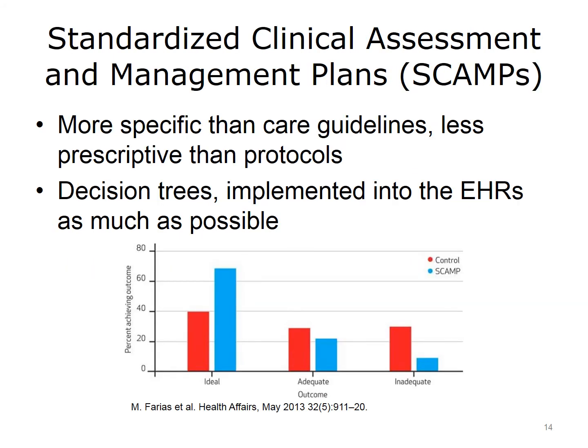Finally, let's look at the work by Boston Children's Hospital to develop standardized clinical assessment and management plans, also known as SCAMP. These plans are more specific than guidelines of care but less prescriptive than protocols. They're designed by the health system based on extant knowledge and internal observational studies. At Boston Children's, there are decision trees where each characteristic leads down a different path with different probabilities for outcomes. They attempt to enter these into the EHR in terms of what data needs to be collected and to support the SCAMP. Initial work showed providers liked the decision trees, as they reduced variability and improved outcomes. Heart catheterization outcomes for children are shown comparing the control period to the post-SCAMP period — the percentage of ideal outcomes grew substantially and inadequate outcomes were reduced.